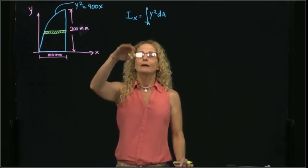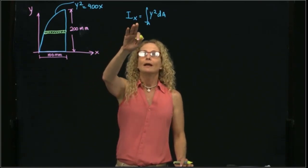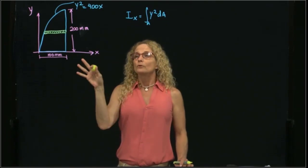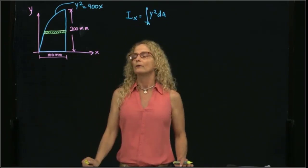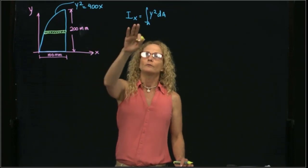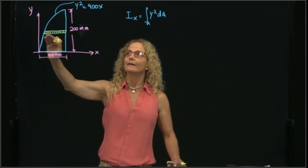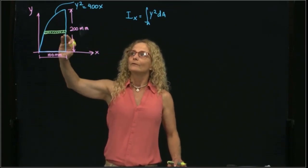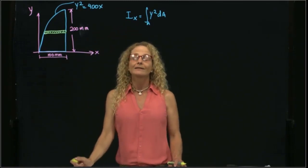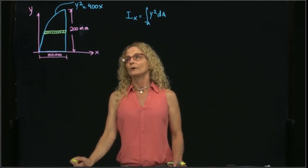So in the case that I want to calculate the inertia about x, I use an x-axis strip. I will do another video where I use a vertical strip for x, but in this video I will use a strip parallel to the direction of the axis for which I want to calculate the area moment of inertia.